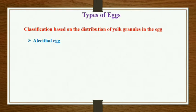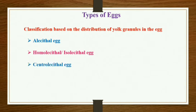First is the olecithal egg. Second is homolecithal, also called as isolecithal egg. Third is centrolecithal egg. Fourth is the telolecithal egg.